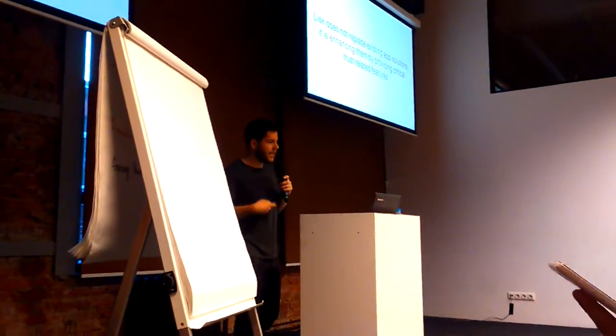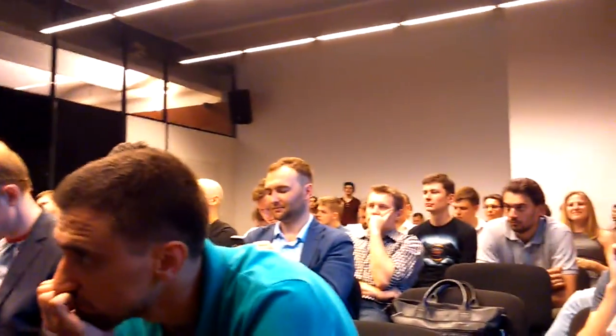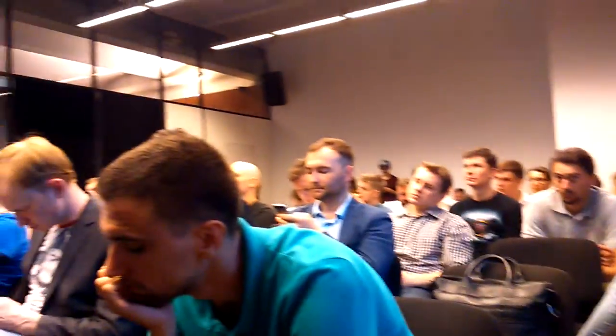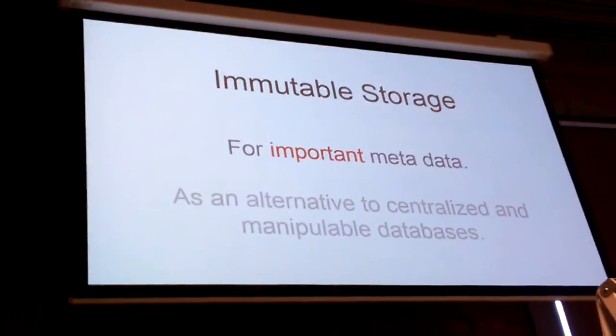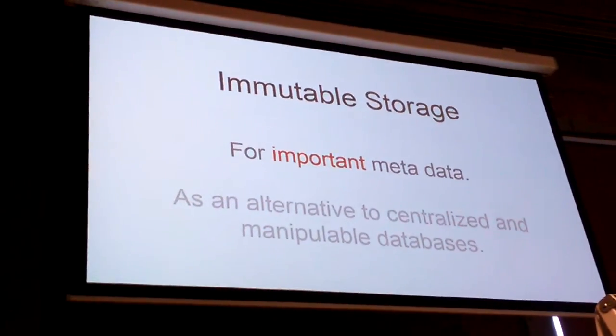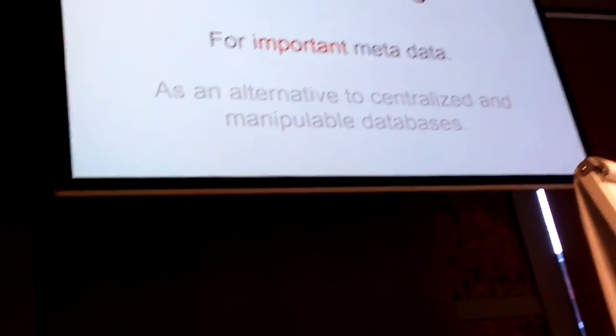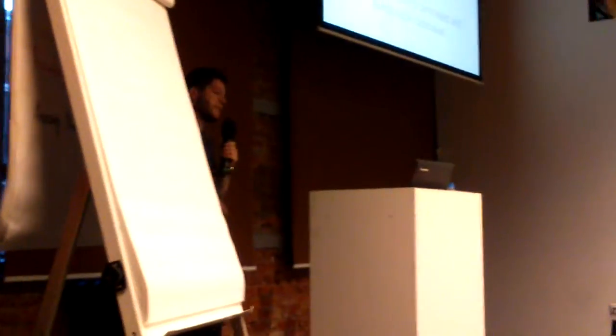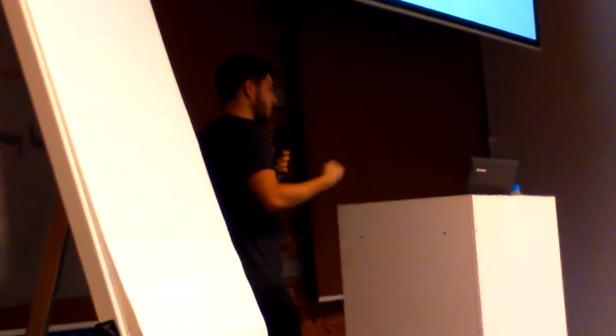This is more of a philosophical question: do you want to make it centralized or decentralized? In the case of blockchain services, there are many examples you can build on Lisk for many different use cases. As I mentioned, immutable storage for blockchain metadata — for usernames, for identities, for status updates which shouldn't be deleted anymore.